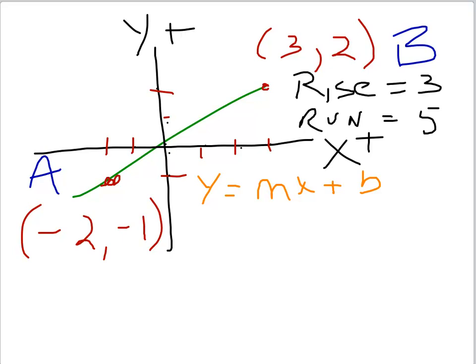So we have an m of three over five. And clearly we can choose either of our points A or B, and I'm going to choose B as it's in quadrant one and both are positive. And so plugging in the Y of two and the X of three, we now have to solve for b.